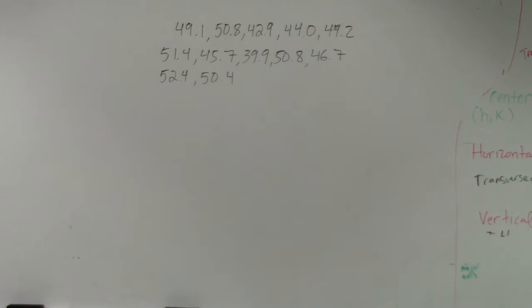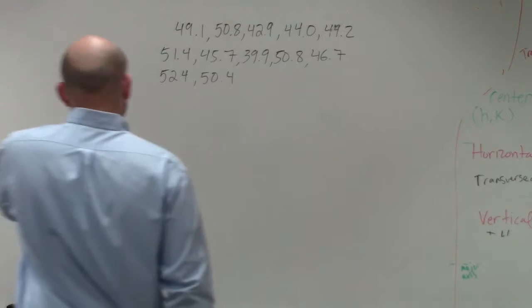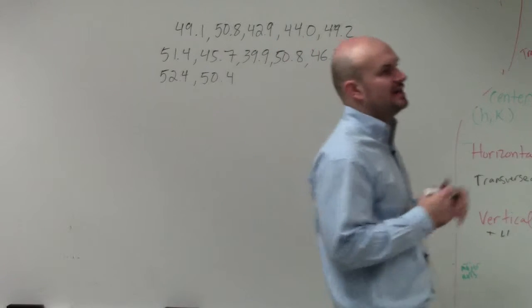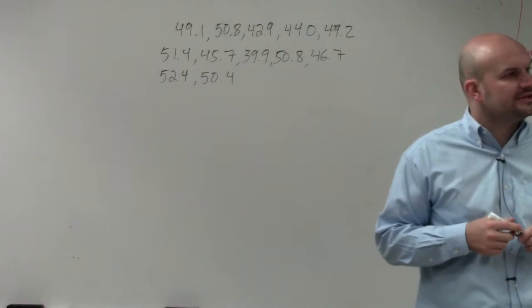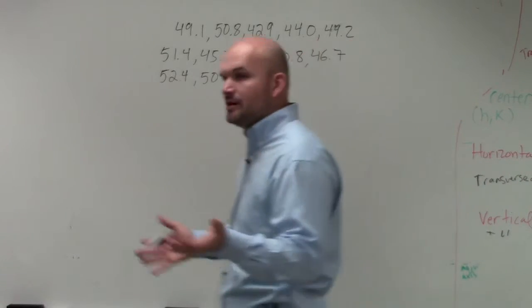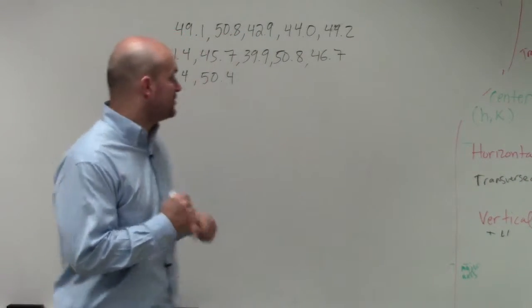When you're given a data set and they're asking us to describe it in a box and whisker plot, the main important thing that we need to do is arrange everything in order, and particularly we like to do from least to greatest.